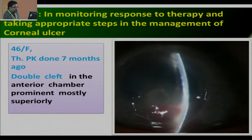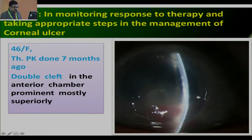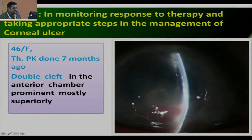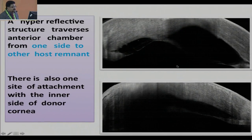Another patient: ASOCT monitoring the response to therapy — this patient had a penetrating keratoplasty seven months ago, therapeutic PK for corneal ulcer. The patient never developed a clear graft, sutures became loose and were removed at three to four months. The patient then developed some infiltrate in the graft. On anterior segment OCT, we could see a double anterior chamber and a cleft in the anterior chamber which was prominent superiorly. A hyperreflective structure traverses the anterior chamber from one side to another — this is the hyperreflective membrane, with one attachment site in the donor area.